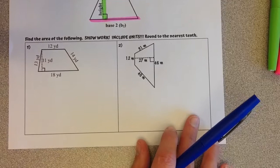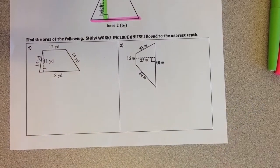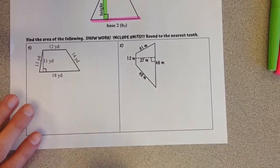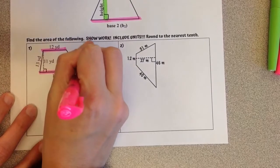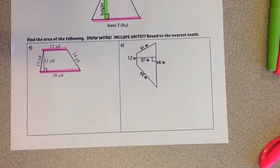Let's look at example 1. Find the area of the following, show your work, include units, and round to the nearest tenth if necessary. First thing I'm doing is I'm identifying those parallel sides. The top and bottom in this instance are our parallel sides, so those are the two bases.